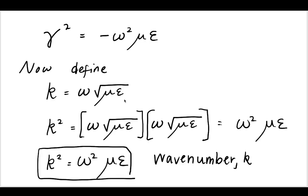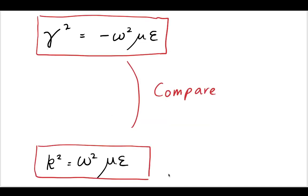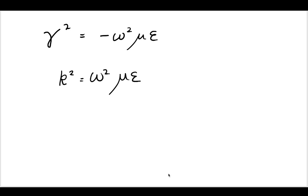Now, we will say that this wave number is k, and k squared is equal to this. And we've now defined a wave number. And we can compare our gamma squared and this wave number. And we can see that they're very similar to each other. Therefore, we can also say that gamma squared is equal to minus k squared when we are in an environment where we have zero conductivity.